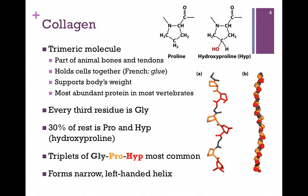The next intermediate filament we want to look at is collagen, and we'll see it's different not only in its primary structure but also its quaternary structure — it's a trimer. It's a part of animal bones and tendons, so again a very strong structure. It holds our cells together; in fact, the word collagen comes from the French meaning glue, so it essentially glues our cells together. It's the most abundant protein in most vertebrates. An interesting thing about the primary structure is that every third residue is glycine, and thirty percent of the rest of the residues are either proline or hydroxyproline.